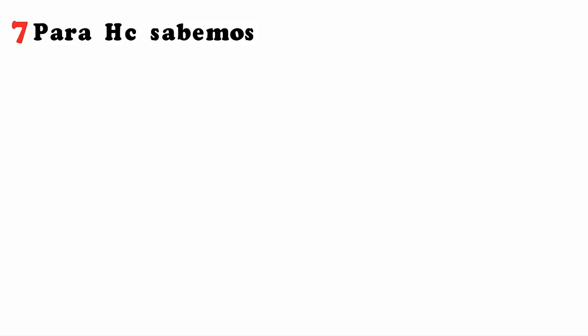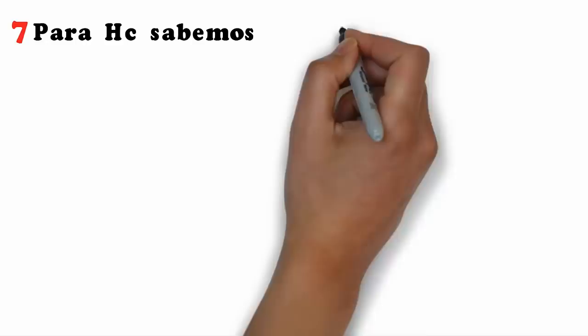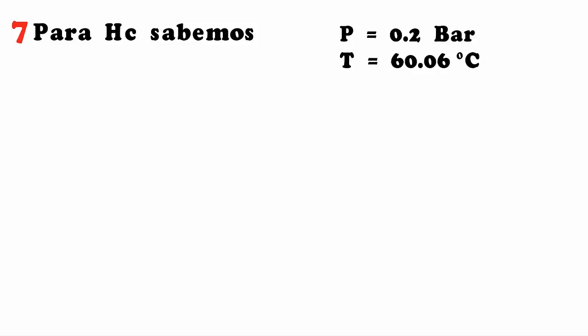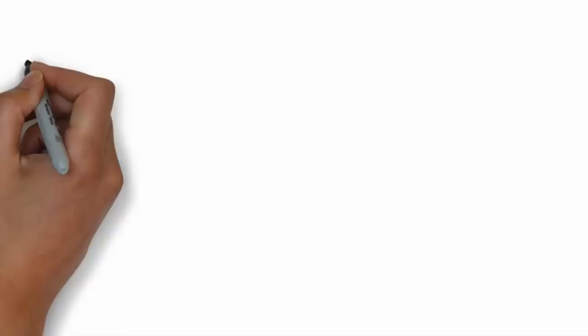To calculate HC, we know it also has a pressure of 0.2 bar, corresponding to a temperature of 60.06°C. At this value, the saturated liquid enthalpy is 251.40 kJ/kg.